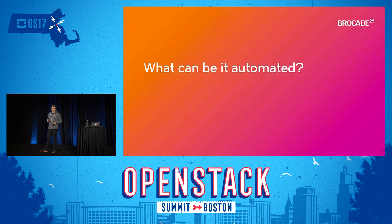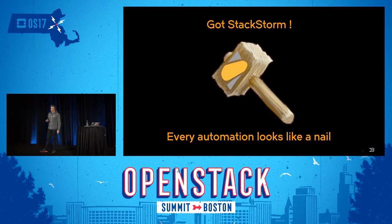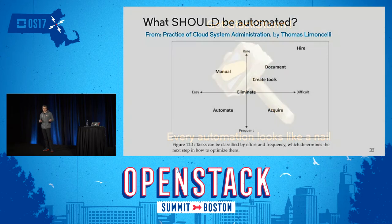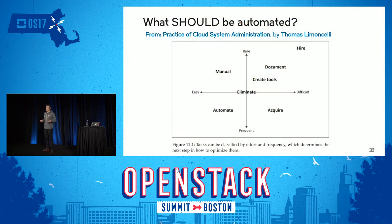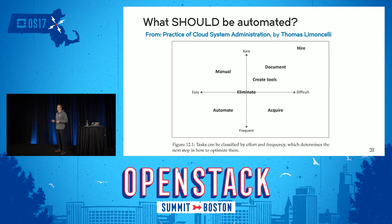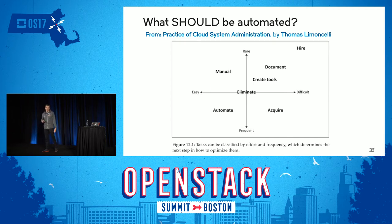What can be automated? StackStorm is pretty generic — I've got a hammer and I can probably automate everything. But the right question is what should we automate. We should automate things within reason. As the book on cloud automation says, we need to automate the irritating things which irritate us too often — things that are easy to automate and happen frequently.